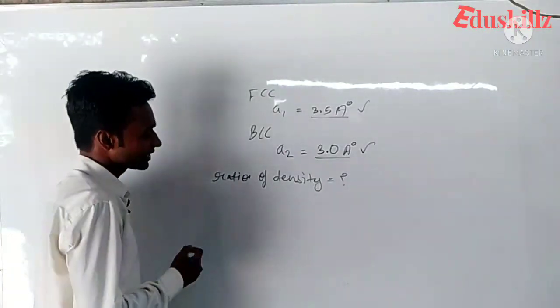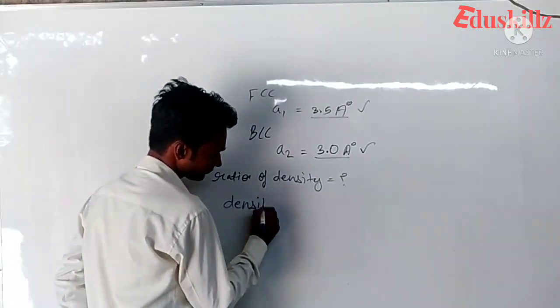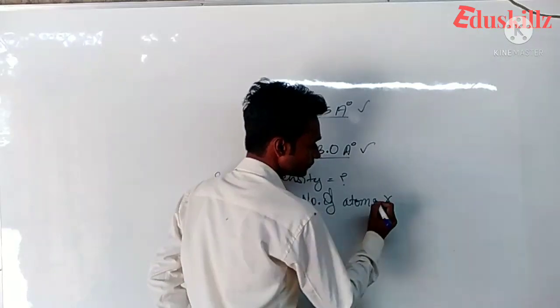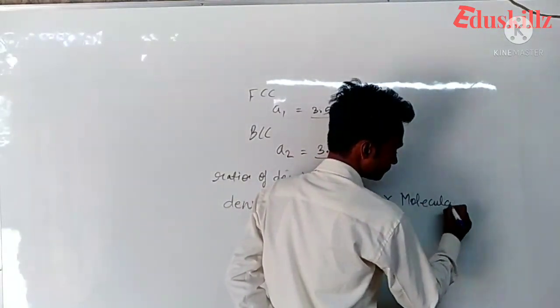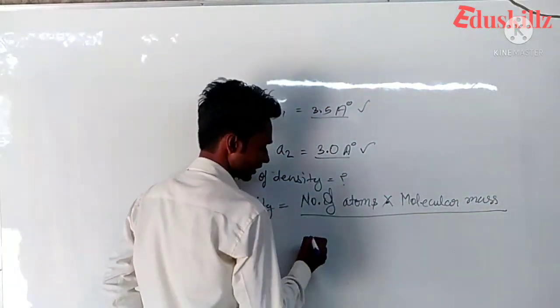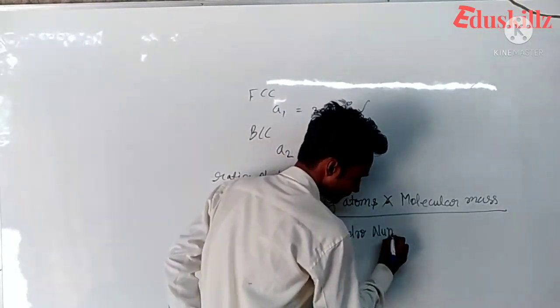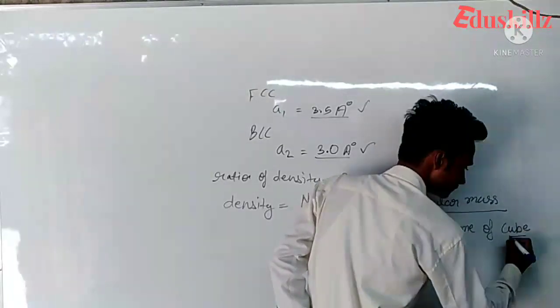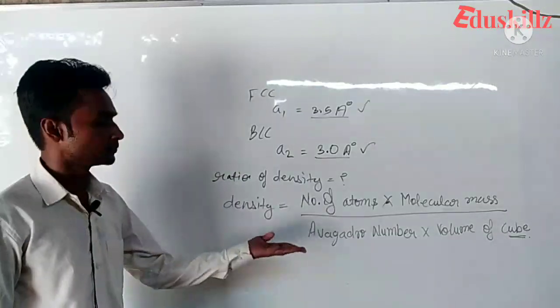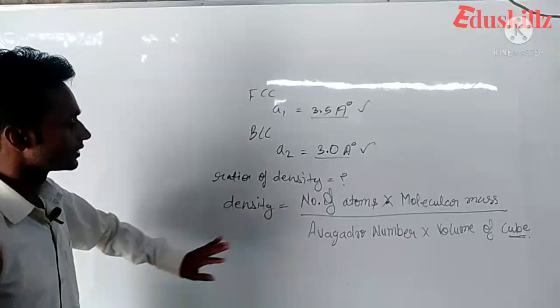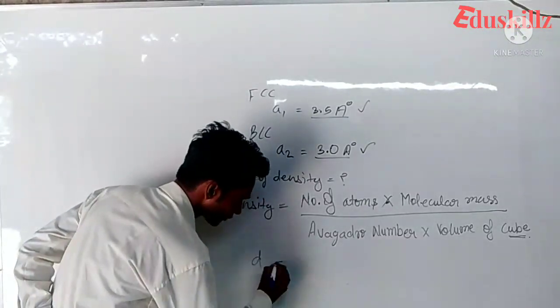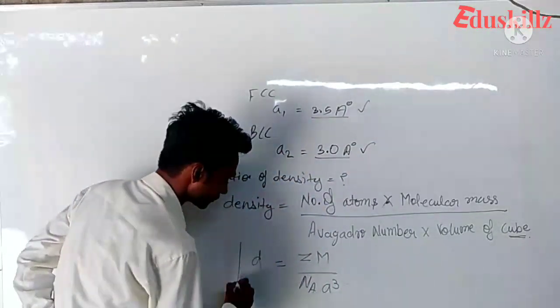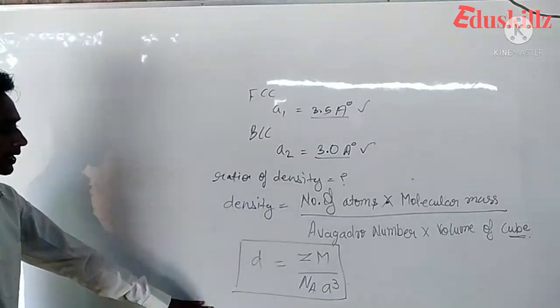So here we start with density. Density is equal to number of atoms into molecular mass divided by Avogadro's number into volume of cube. This is the formula of density. Now we take the value of density.